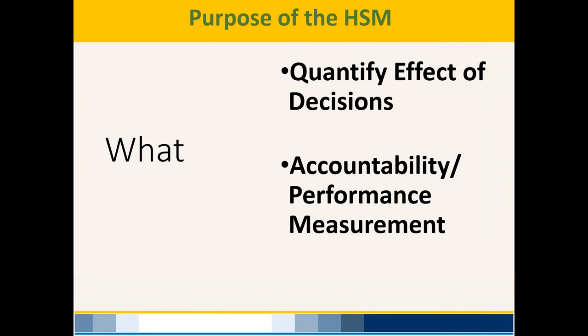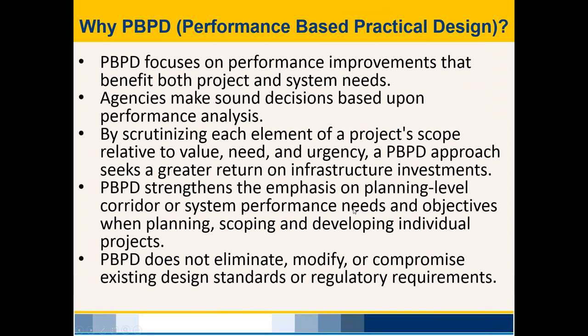The purpose of the highway safety manual is to quantify the effect of decisions and help with performance measurement and accountability. This ties into performance-based practical design: agencies can make sound decisions based on performance analysis, it strengthens planning-level corridor performance, helps in scoping, and helps understand what is more important on a given project. Importantly, it does not eliminate existing design standards — it aids that total package.